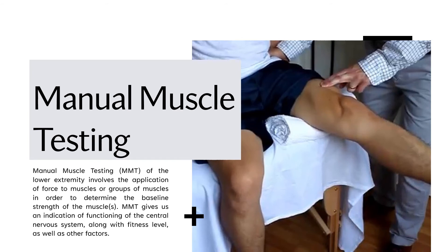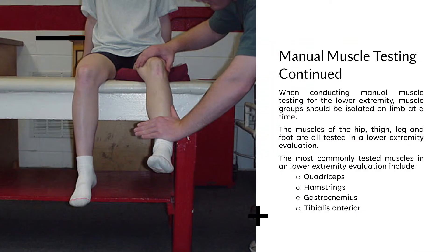Manual muscle testing, or MMT, of the lower extremity involves the application of force to muscles or muscle groups to determine baseline strength. MMT gives an indication of the functioning of the central nervous system along with fitness level and other factors. Muscle groups should be isolated one limb at a time, testing the muscles of the hip, thigh, leg, and foot. The most commonly tested muscles include the quadriceps, the hamstrings, the gastrocnemius, and the tibialis anterior.